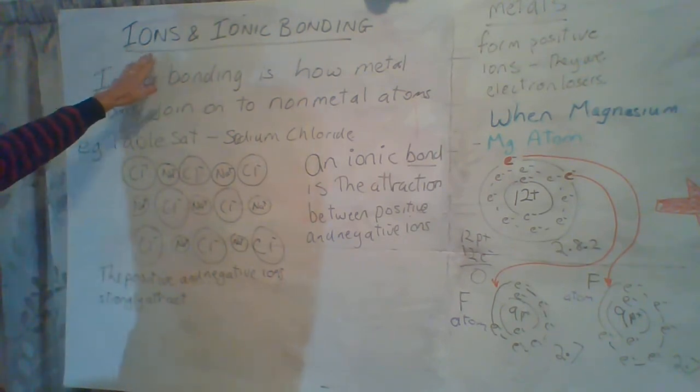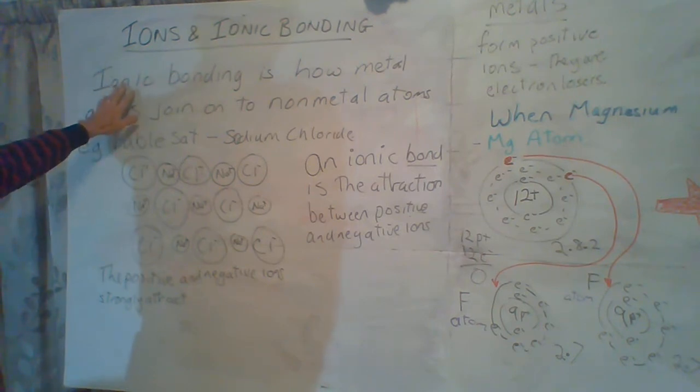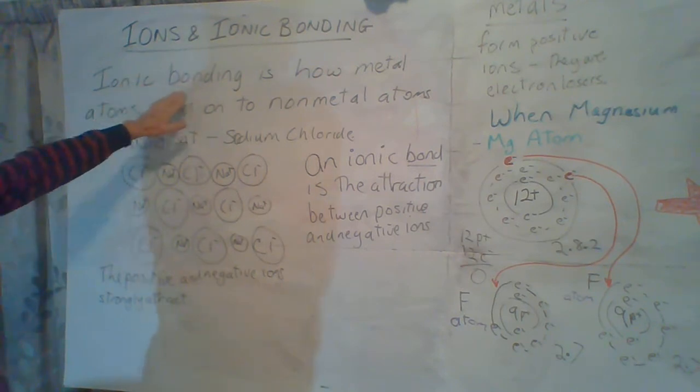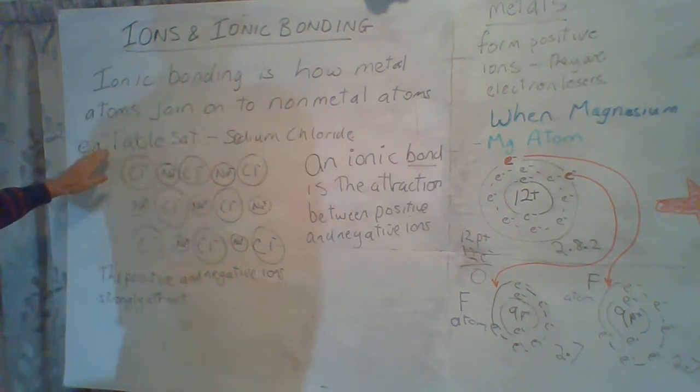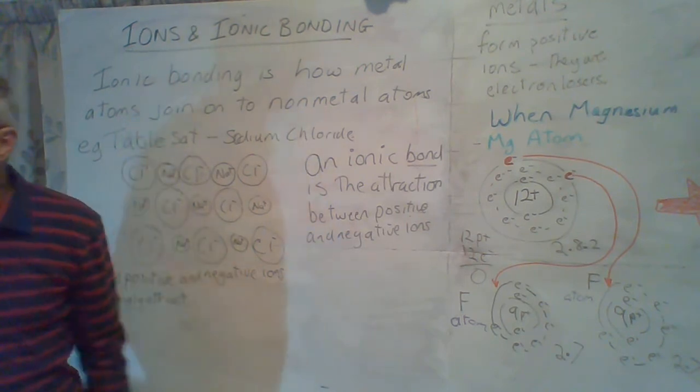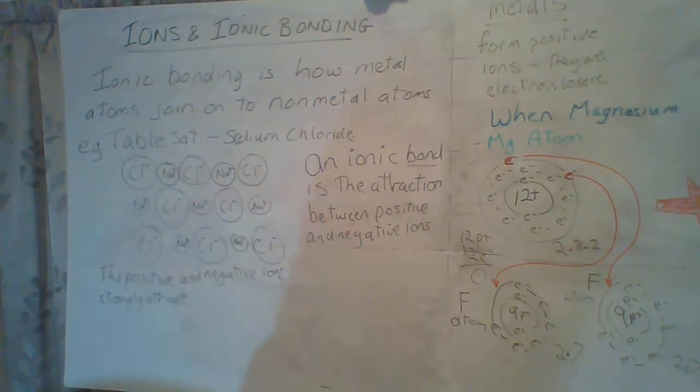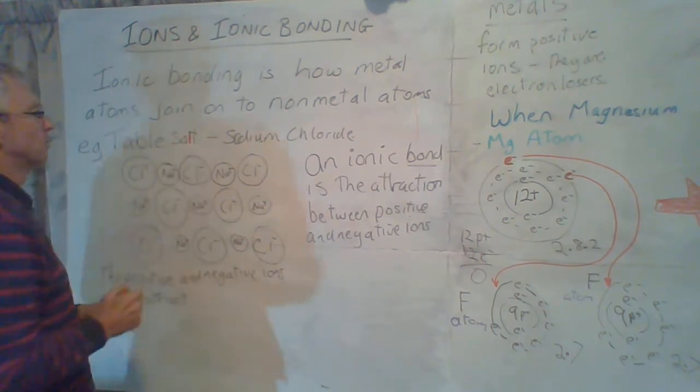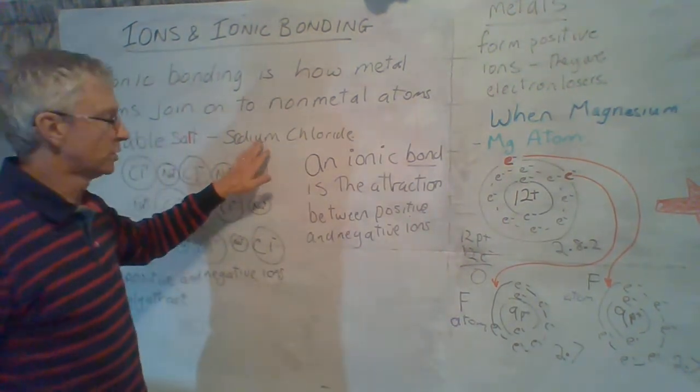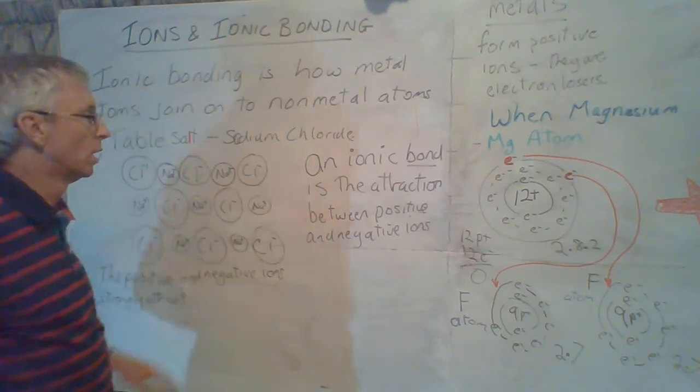So, ions and ionic bonding. What is all the ions business about? It is about how atoms bond or join together. Ionic bonding is how metal atoms join onto non-metal atoms. For example, table salt, which is also chemically called sodium chloride.